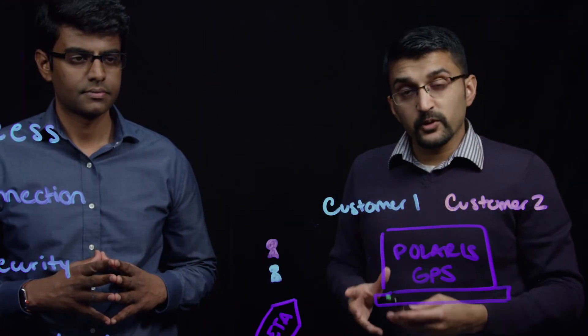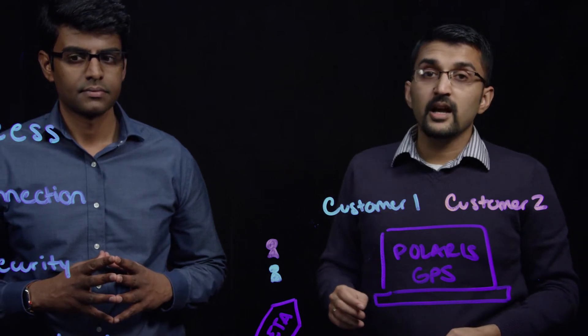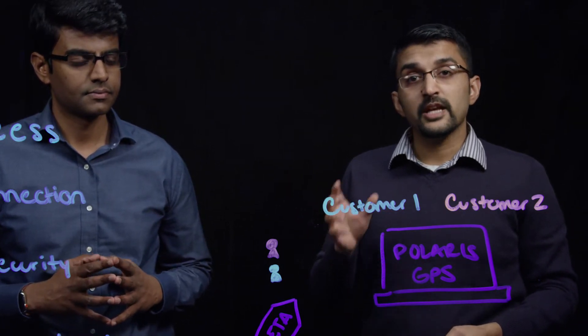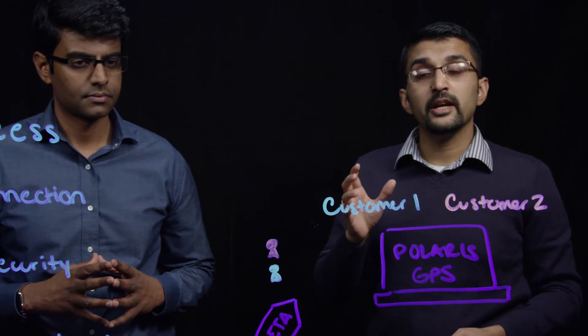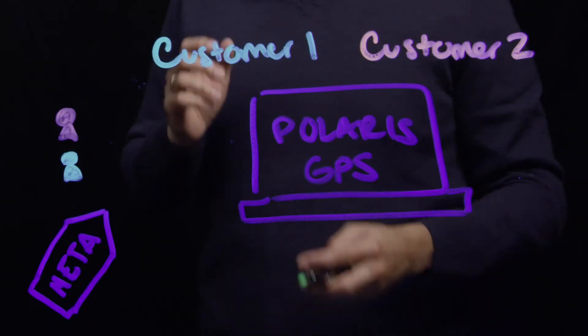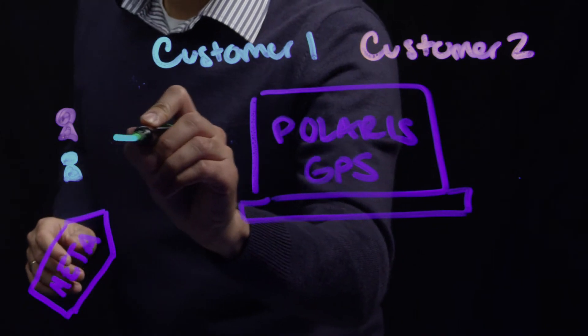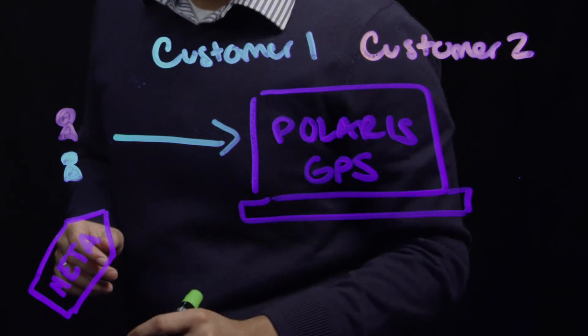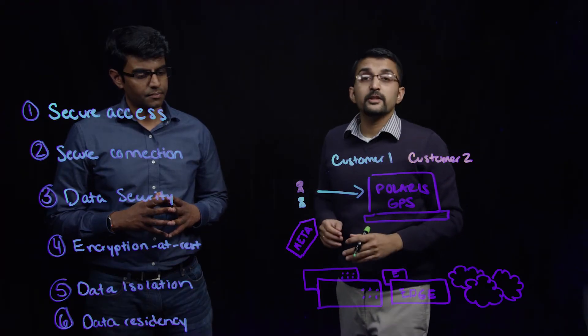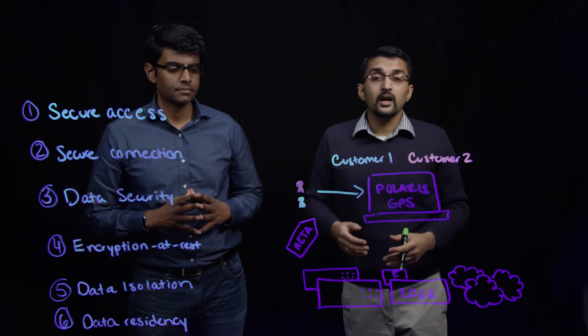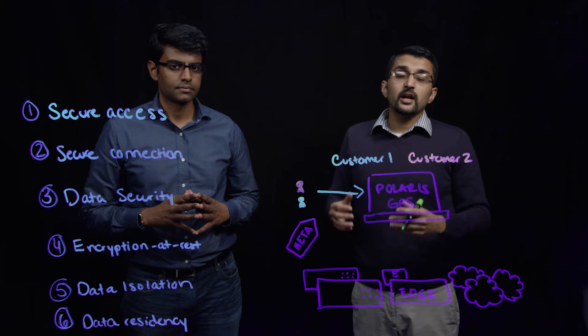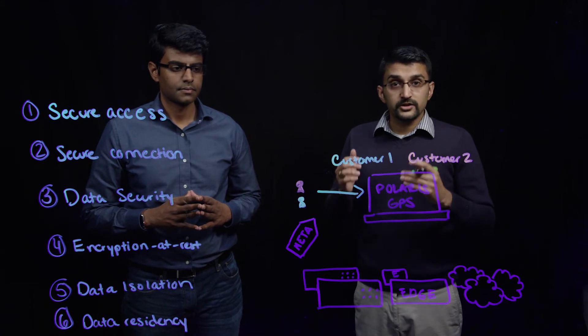Let's take a look at the first component, secure access. Polaris GPS ensures end-user authentication using password policy according to the industry's best practices. In addition, we are able to detect brute force attacks and block any credentials that have been found to be part of a security breach.